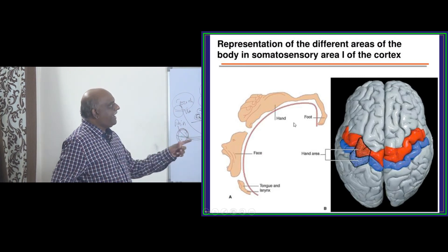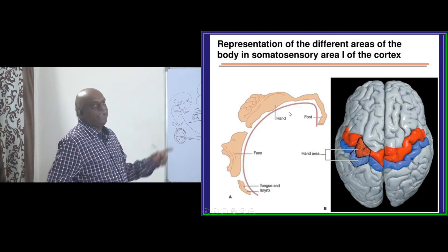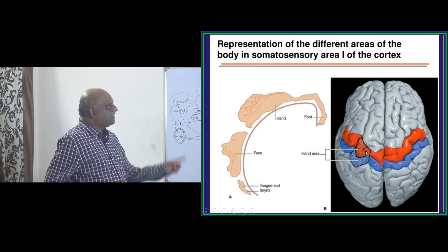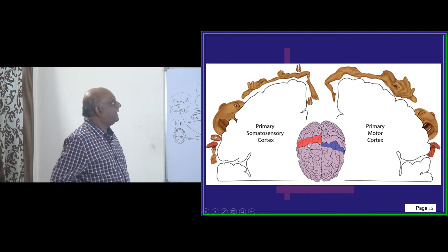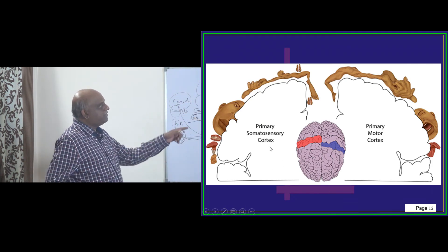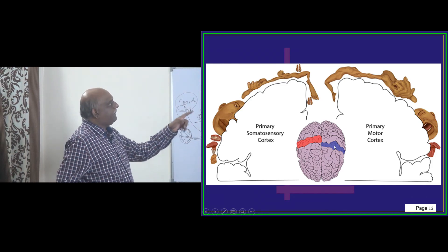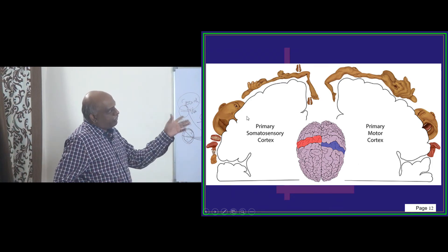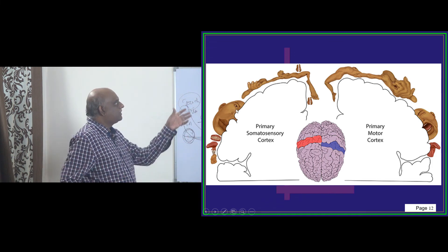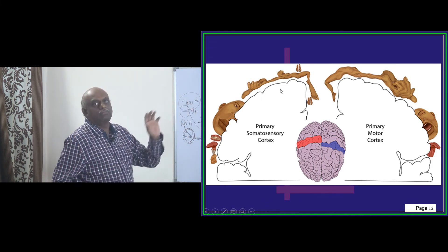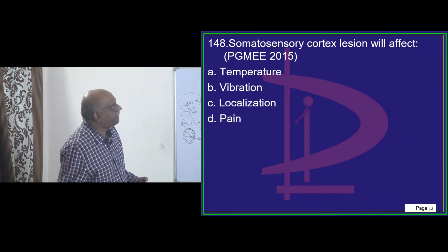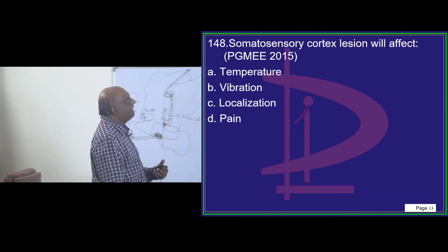So once more, the face, the hand have the highest amount of representation in the somatosensory cortex in the homunculus is what I like to underscore to all of you. So you have a motor cortex, you have a somatosensory cortex. If you compare the two, both in motor cortex and somatosensory cortex, the face and the palm have the highest amount of representation is what I want to ultimately underscore to you.